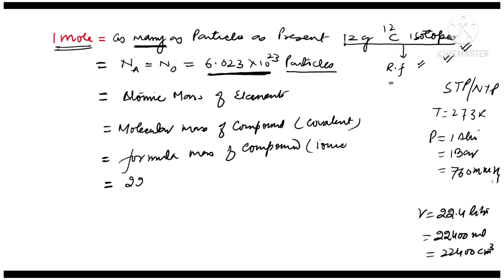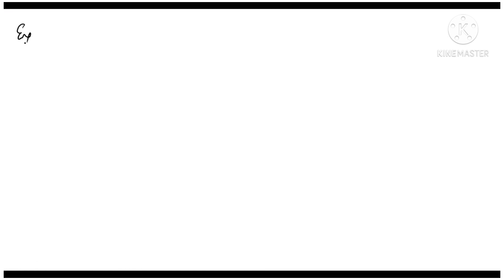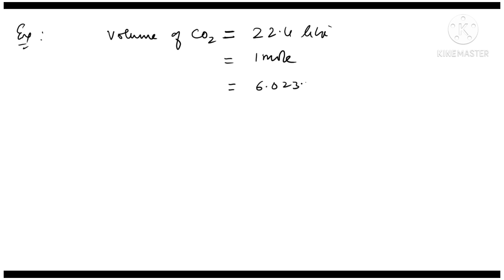Therefore, 22.4 liters of any gas at standard temperature and pressure contains Avogadro's number of molecules. Since Avogadro's number of molecules equals one mole, therefore one mole is also equal to 22.4 liters of any gas at STP. For example, if you have a vessel containing 22.4 liters of carbon dioxide, that means you have one mole of CO2, which must contain Avogadro's number of molecules and whose weight must equal its molecular weight — that is 44 grams.